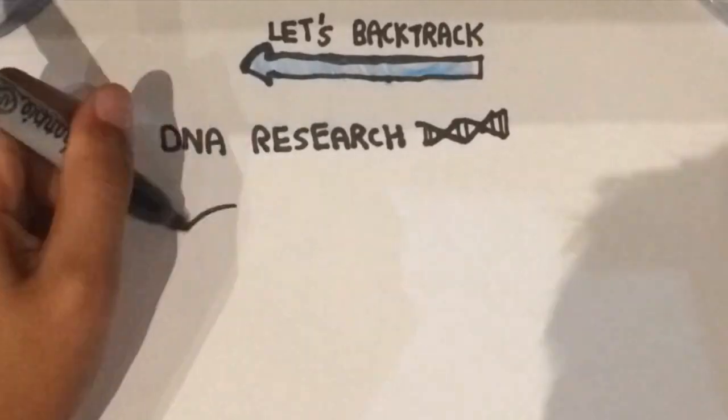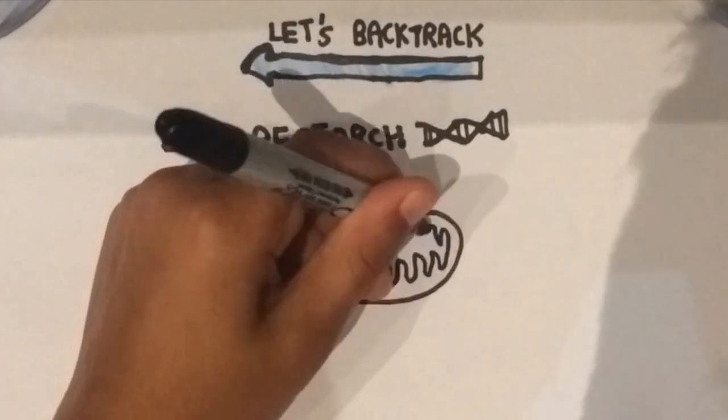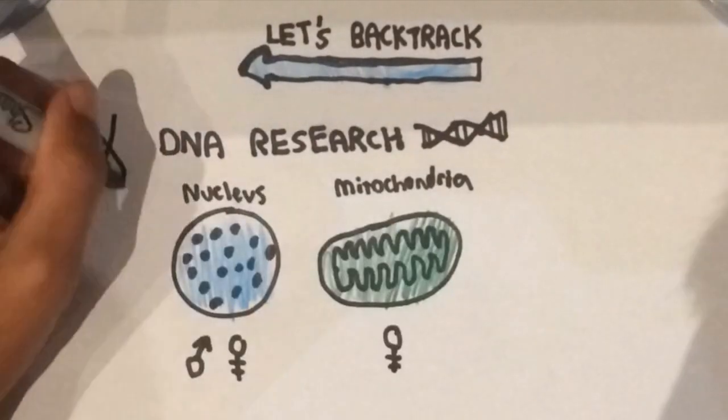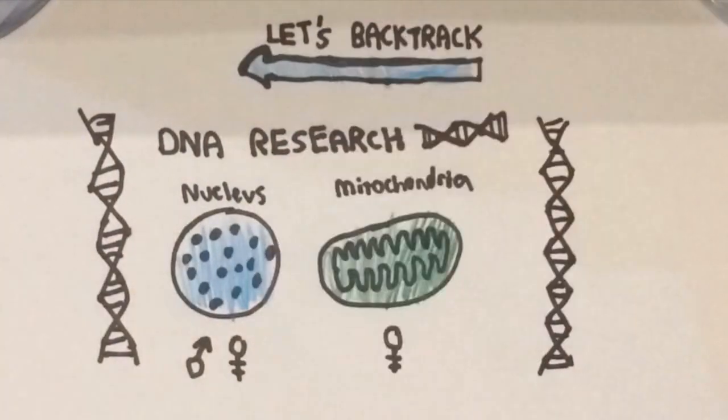DNA research from both the nucleus of the cell, that has both paternal and maternal DNA, and the mitochondria of the cell, which only has maternal DNA, can let us learn more about the fascinating plot that twists and turns about our human history.